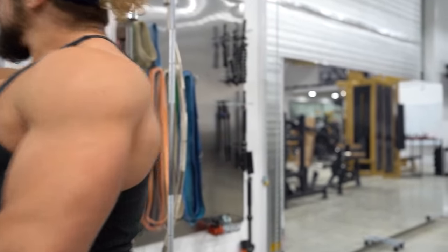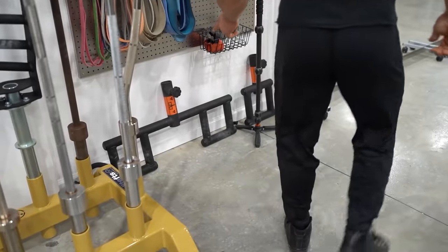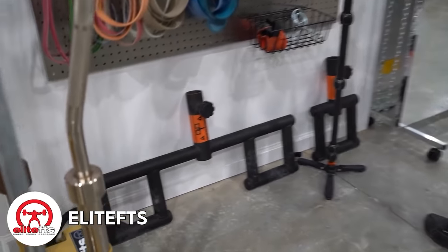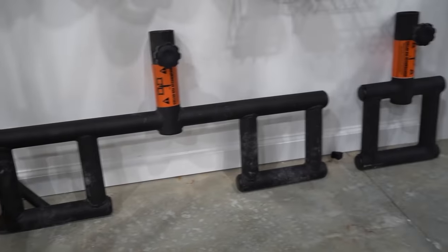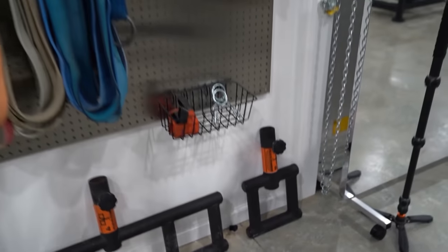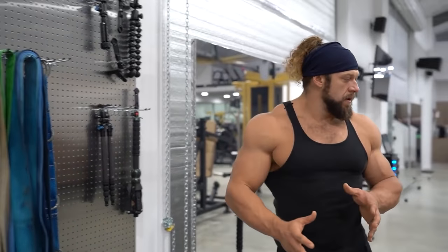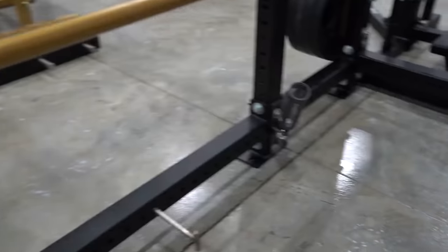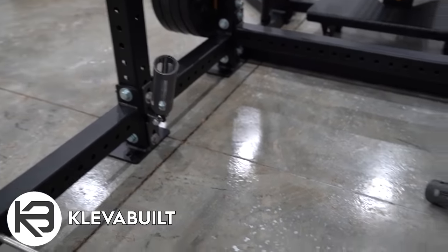And you do have some pressing implements down here, too. This is the Viking press from Elite FTS. You've got your double handle. And you've got your single-handle Viking press, which you put into a landmine. We've got two landmines.